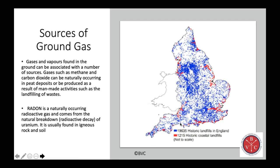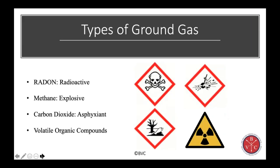Radon is a naturally occurring radioactive gas which comes from the breakdown of rocks. Types of ground gas include: radon, which is radioactive; methane, which is explosive; carbon dioxide, which is an asphyxiant; and volatile organic compounds (VOCs), which are carcinogenic and contain nasty substances from benzene to various other compounds. You add the radon maps on top of the landfill and coal mine contamination and it's quite a challenging environment we live in.